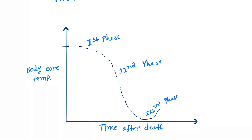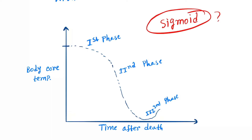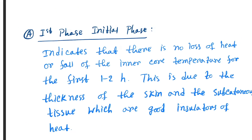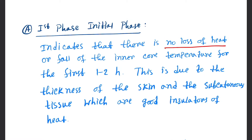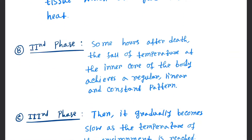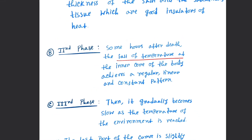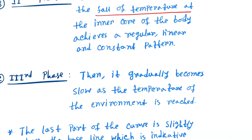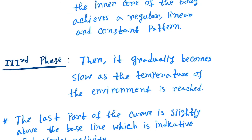The curve is sigmoid in shape. In algor mortis there are three phases of cooling of the body. The first phase indicates there is no loss of heat or fall of the inner core temperature — time duration is one to two hours. Next, the fall of temperature starts to begin; this is the second phase. The third phase is where the body again equilibrates with the temperature of the environment.